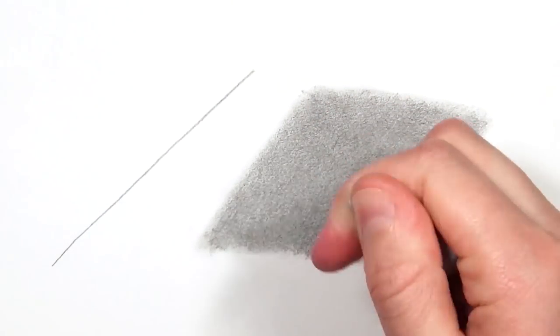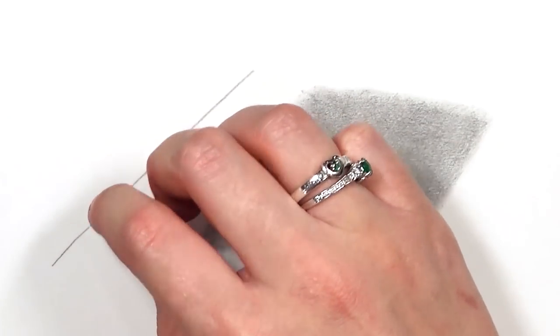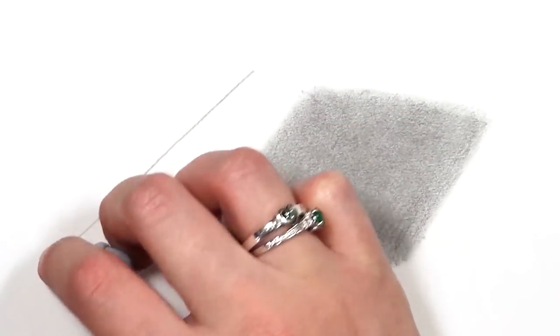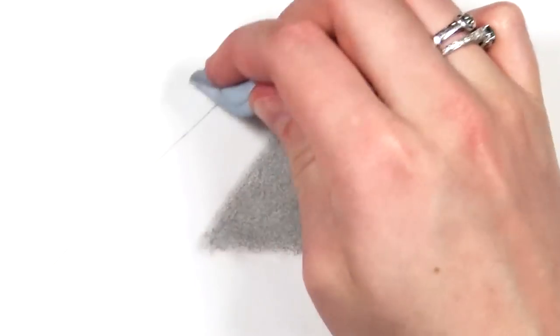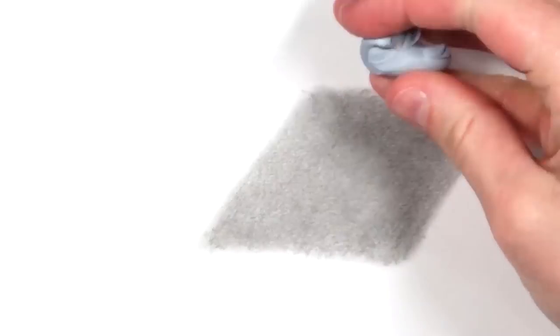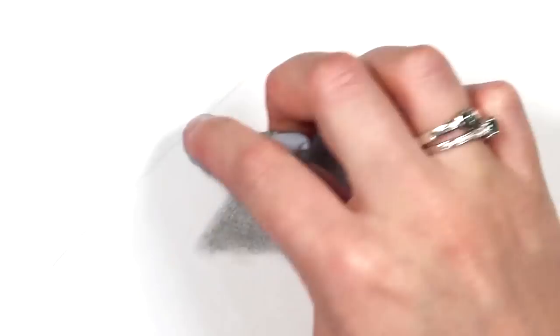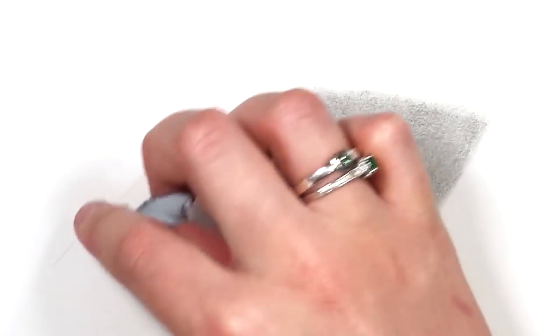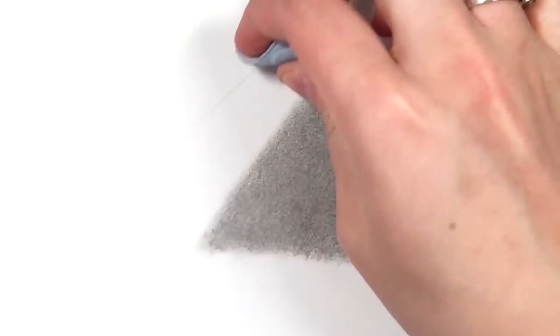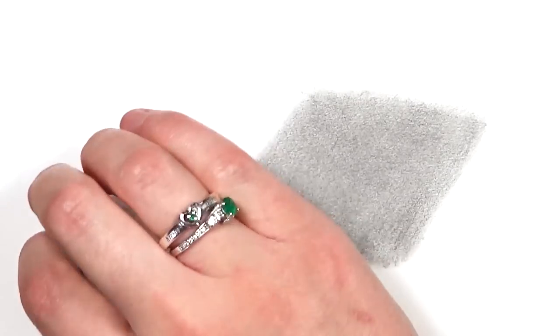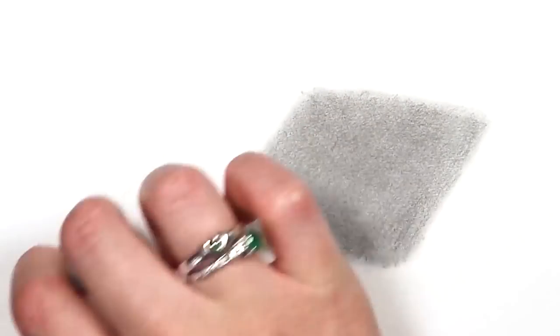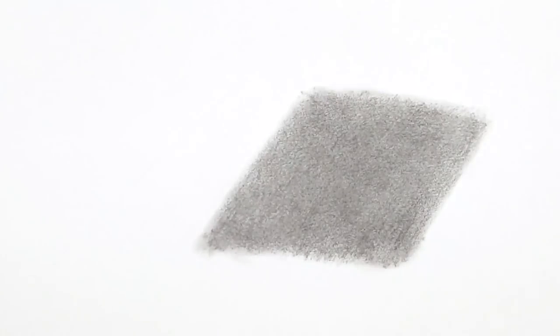Moving on to tip number three, this is just another little tip for saving money. A lot of people use kneaded erasers to remove and create highlights and also erase some of their pencil drawings, but you can use blue tack. This is really cheap and you'll probably have it around your house and it does a very similar job. You can use it to lighten your sketch which I do all the time.